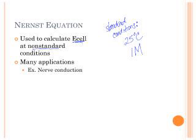With the Nernst equation, we can find out what the cell voltage would be. It has a lot of applications. It allows us to predict what will happen to the voltage of a battery over time. We can also explain nerve conduction by looking at the Nernst equation.